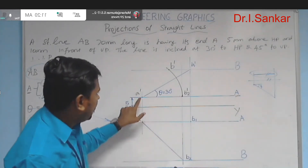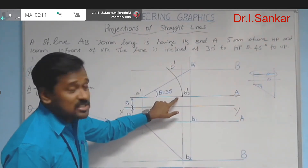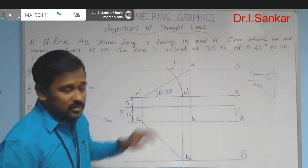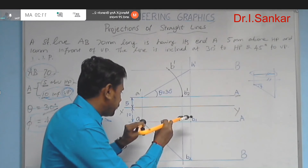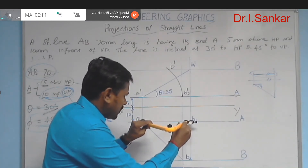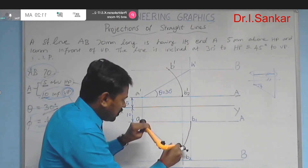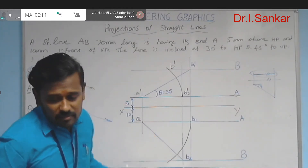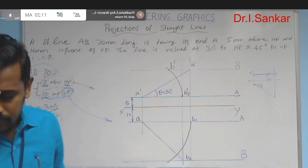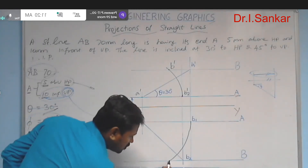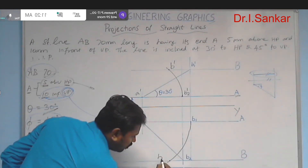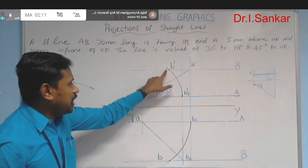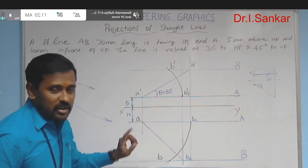Cut one arc and let it intersect with the locus of b in the top view. This intersection point is nothing but your final b. Now connect a'b' and ab with the HB pencil — all previous construction work should be drawn with the 2H pencil only; now only the final answer uses the HB pencil.